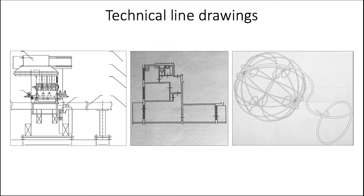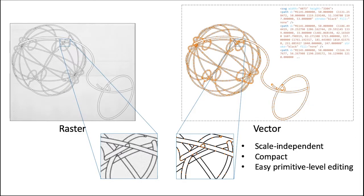Vector representations are often used for technical images, such as architectural and construction plans and engineering drawings. Compared to raster images, vector representations have a number of advantages. They are scale-independent, much more compact, and most importantly, support easy primitive level editing.